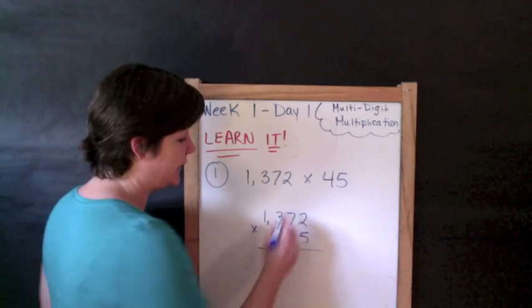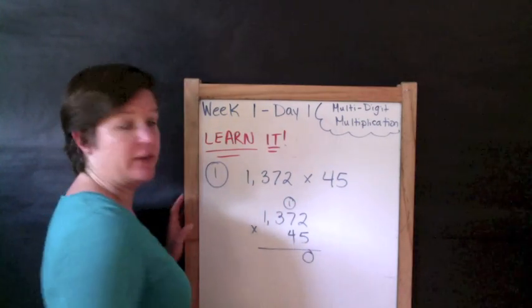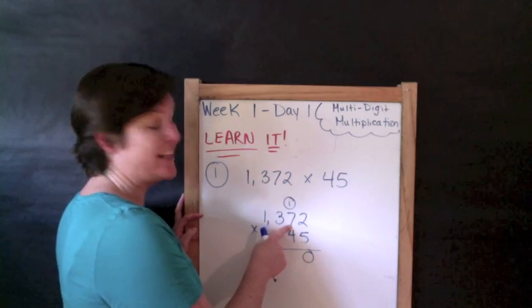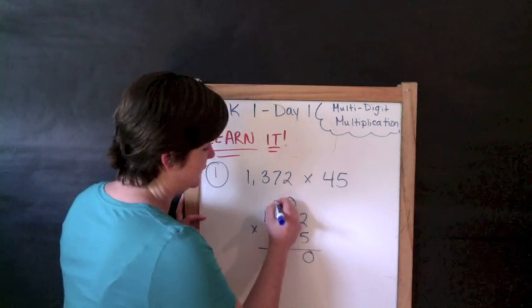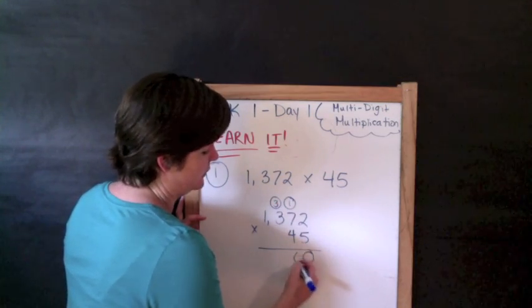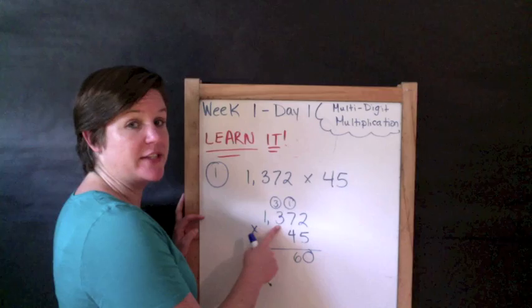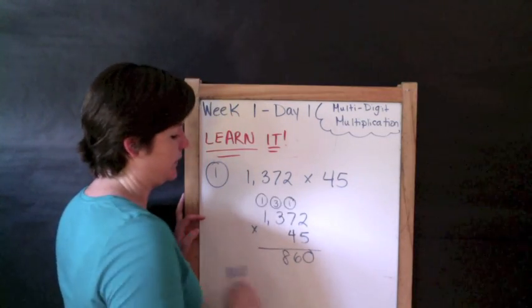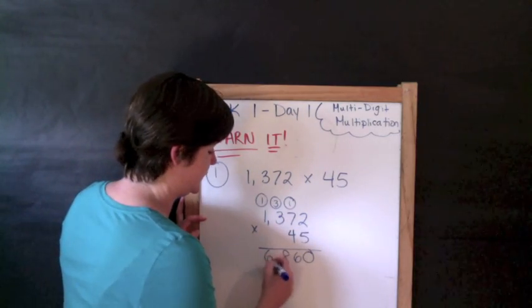Five times two is ten, which is a two digit number. So I'm going to put my one there. Bring the zero down. Five times seven is thirty-five, plus one is thirty-six. Five times three is fifteen, plus three is eighteen. Five times one is five, plus one is six.